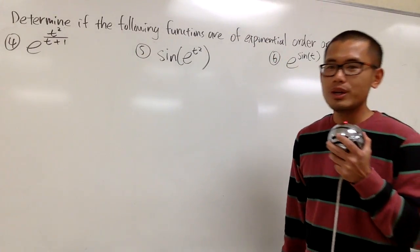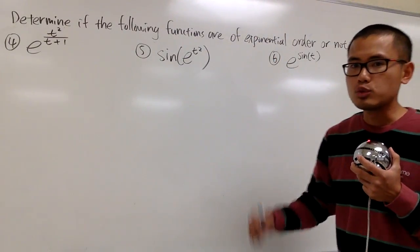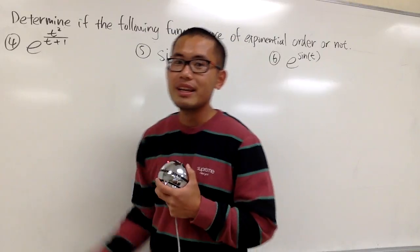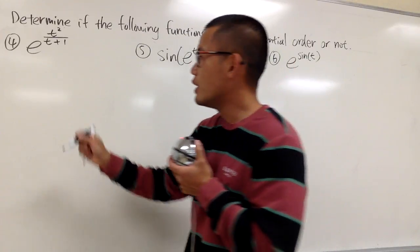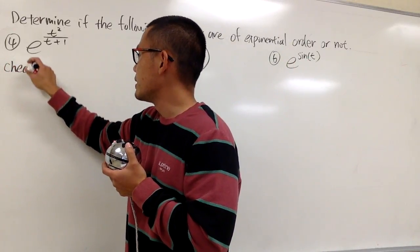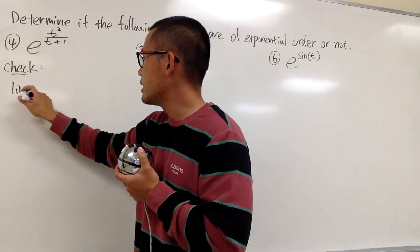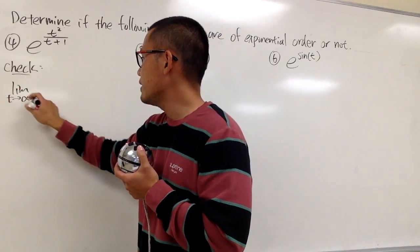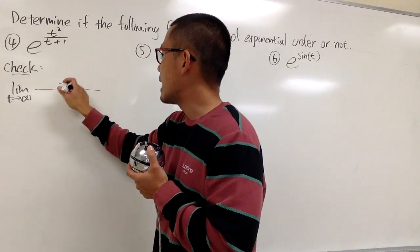Okay, three more examples. We are going to see if these functions are of exponential order or not. Let's look at the first one. Just like in the previous video, we are going to check the limit. So we put down 'check' and we take the limit as t goes to infinity.